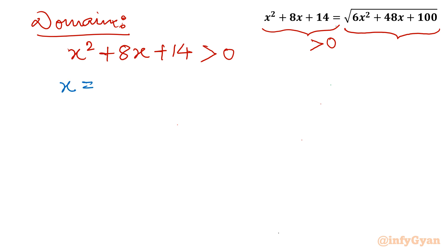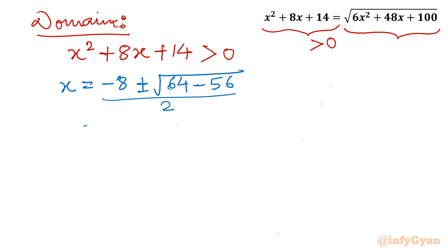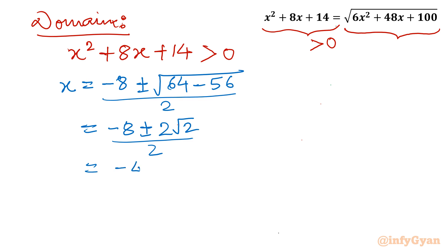Applying the quadratic formula: x = (−8 ± √(64 − 56)) / 2 = (−8 ± √8) / 2. Since √8 = 2√2, this gives x = (−8 ± 2√2) / 2 = −4 ± √2. So the roots are −4 + √2 and −4 − √2.